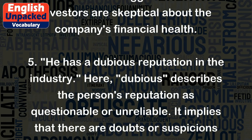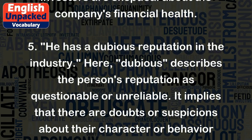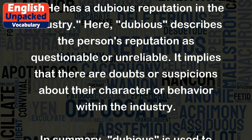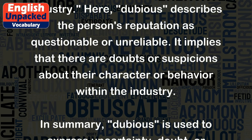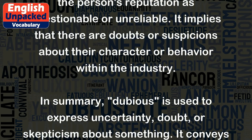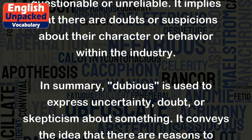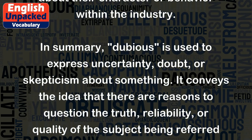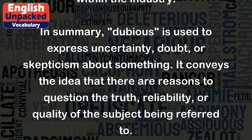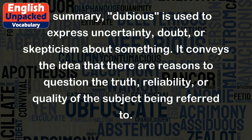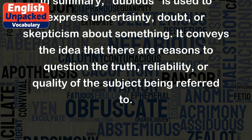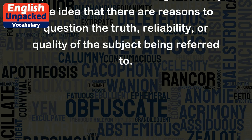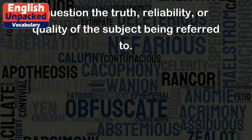Five: He has a dubious reputation in the industry. Here, dubious describes the person's reputation as questionable or unreliable. It implies that there are doubts or suspicions about their character or behavior within the industry. In summary, dubious is used to express uncertainty, doubt, or skepticism about something. It conveys the idea that there are reasons to question the truth, reliability, or quality of the subject being referred to.